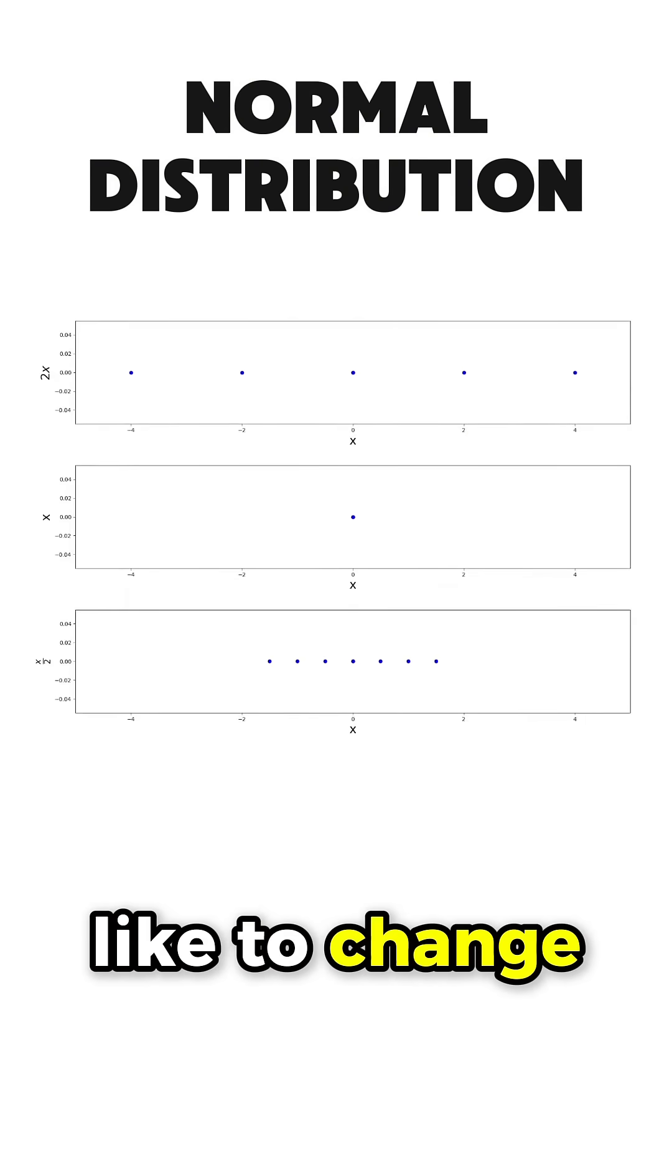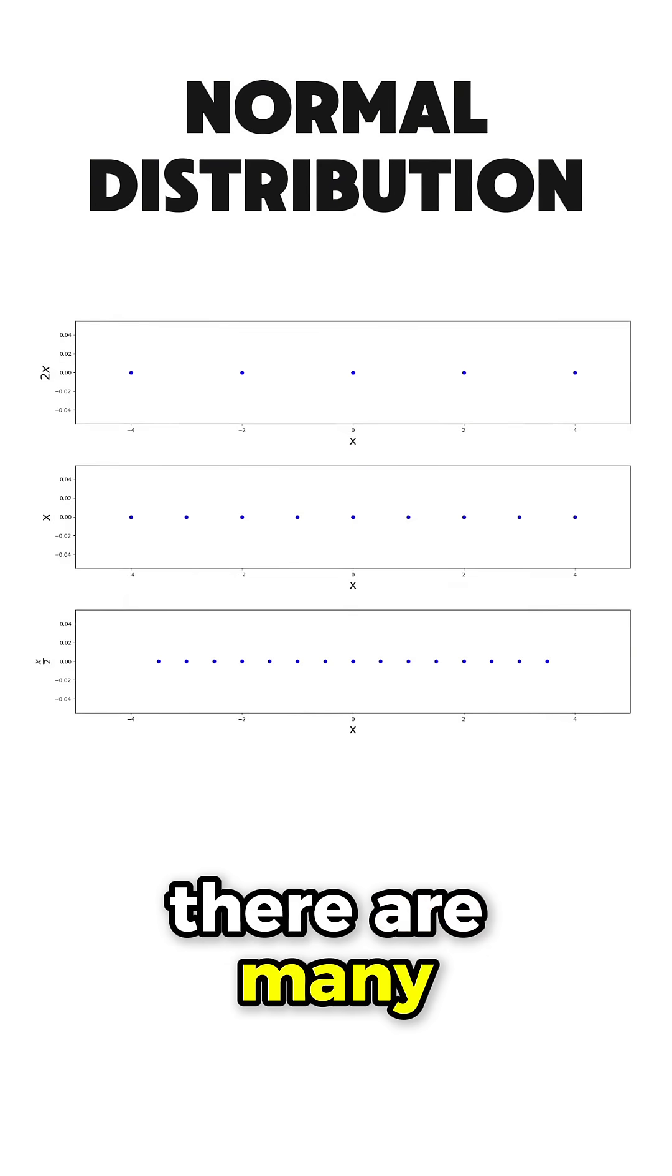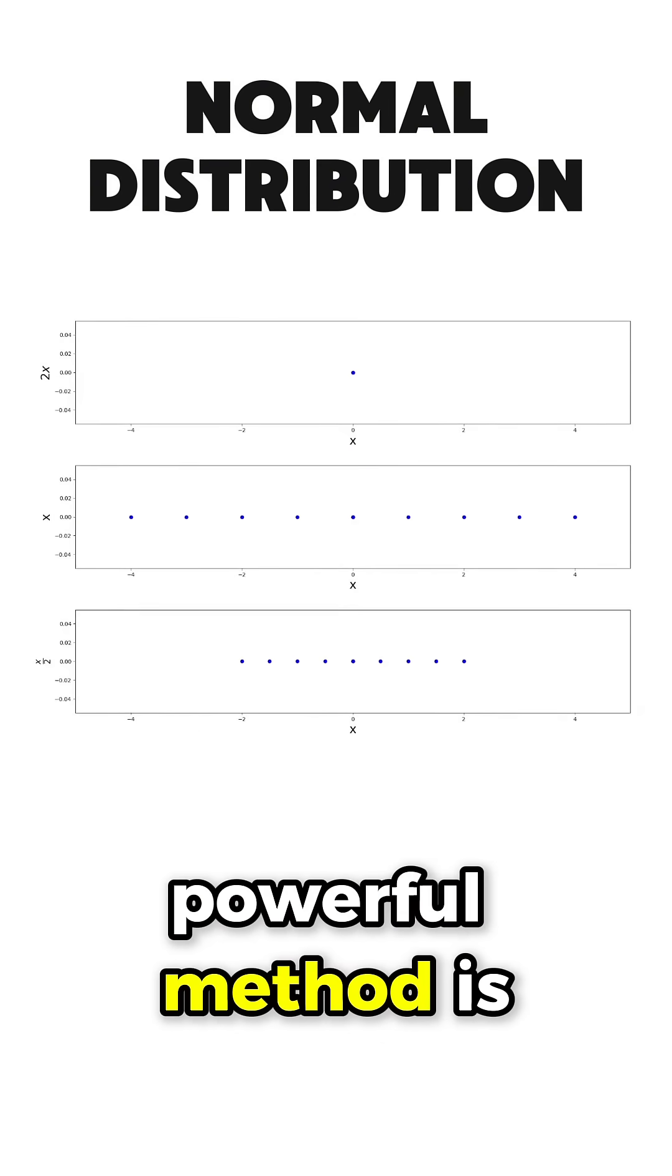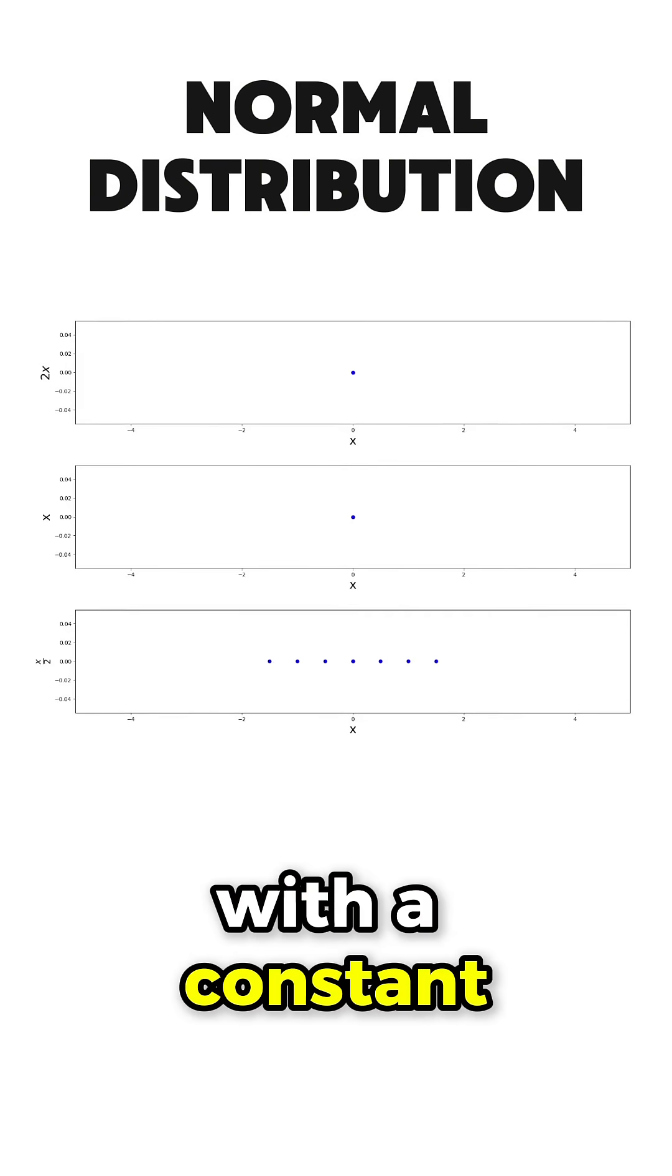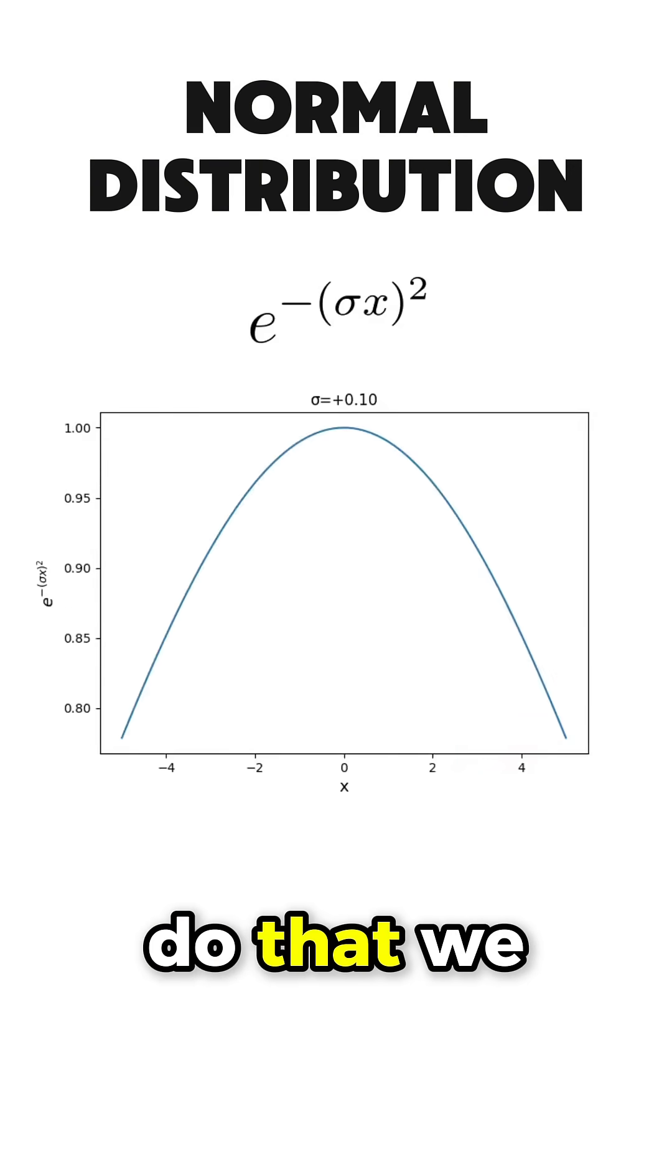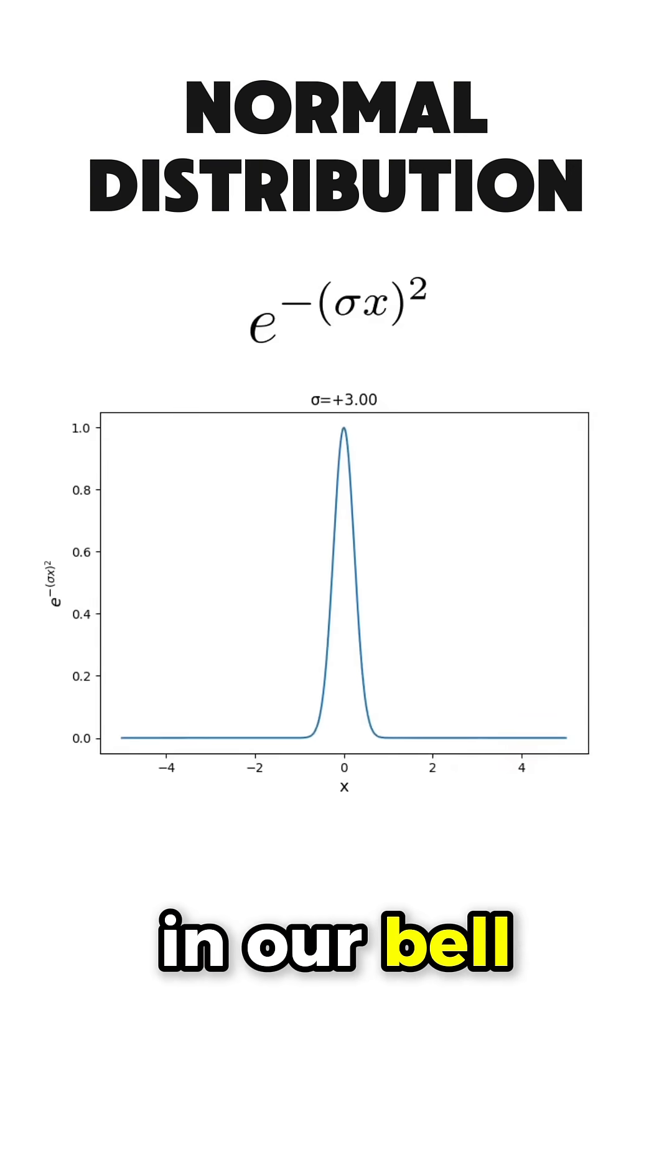Then, maybe we would like to change the shape of the bell. There are many ways to attain that, but the most simple and yet powerful method is to control the spread of our input variable by multiplying it with a constant. And if we do that, we obtain the following behavior in our bell shape function.